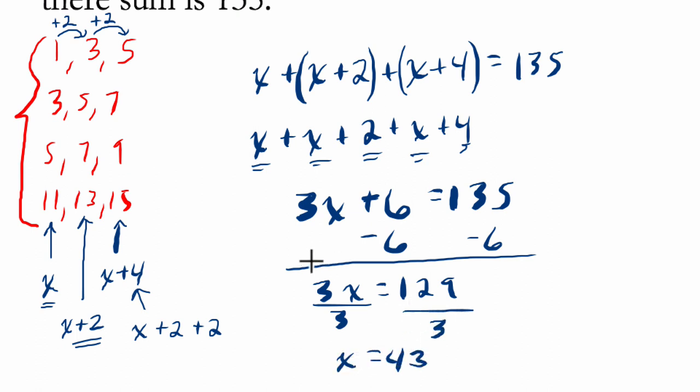So they want us to find all the integers. Well, the first one is 43, I'll put it over here. But the next one is that plus two, or 45, and the third one is 43 plus four, or 47. And there they are, three consecutive odd integers in a row. And if you add them up, you do get 135.